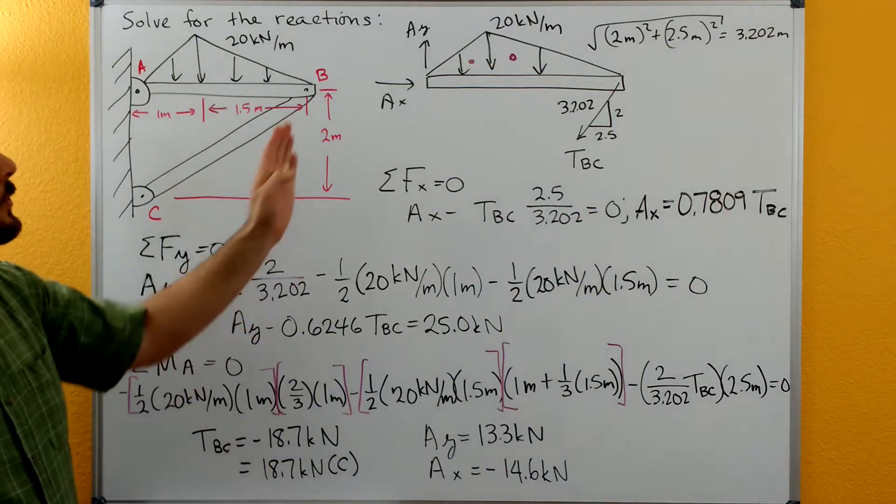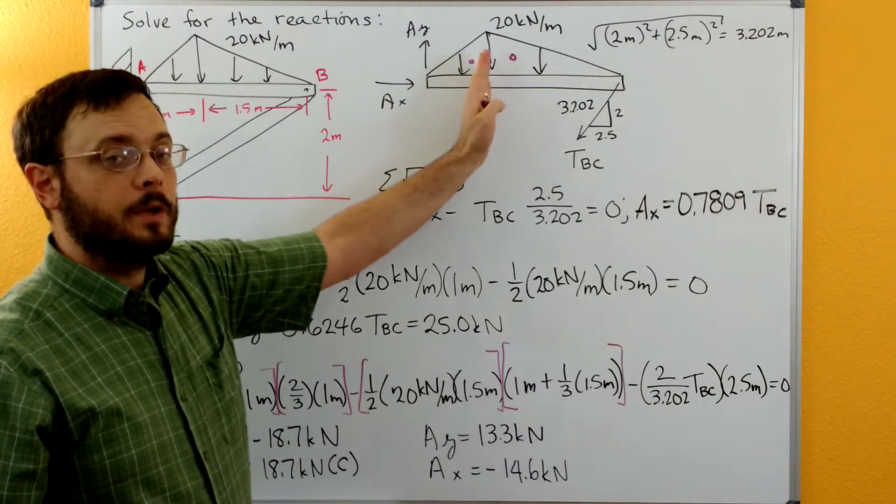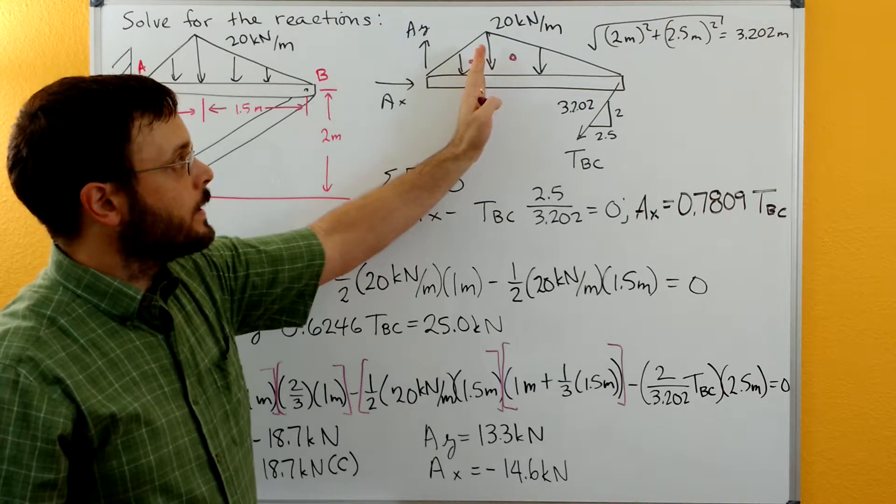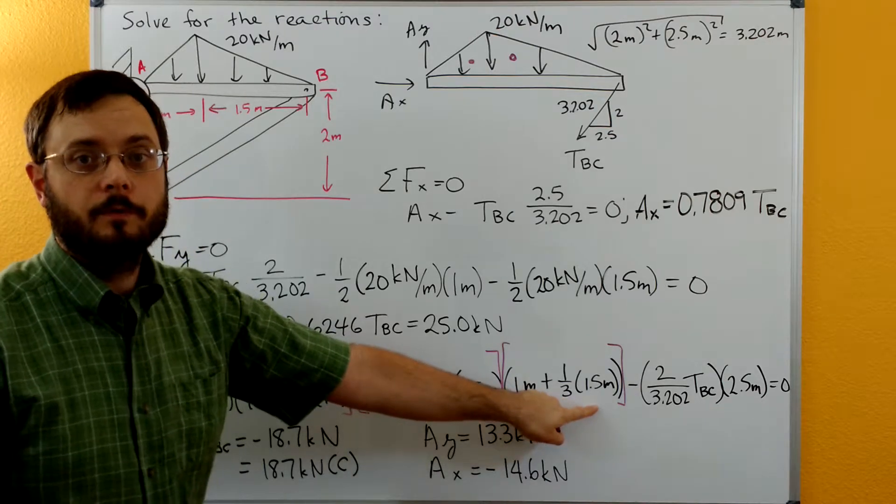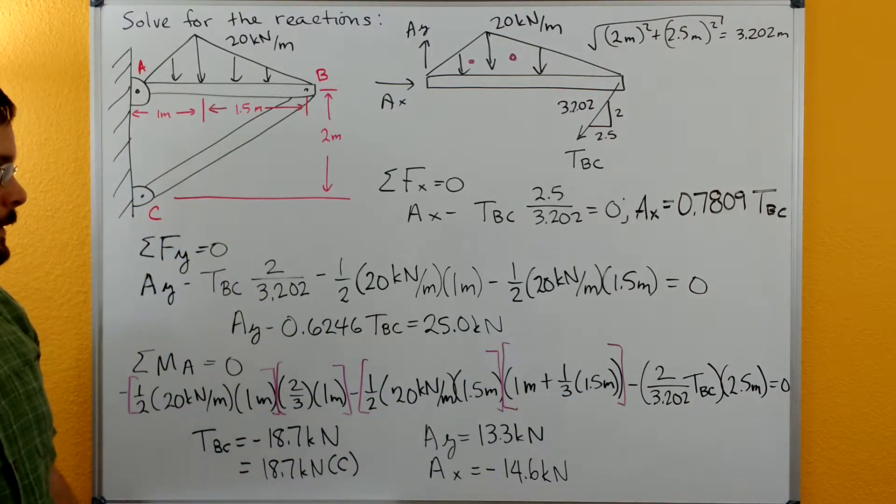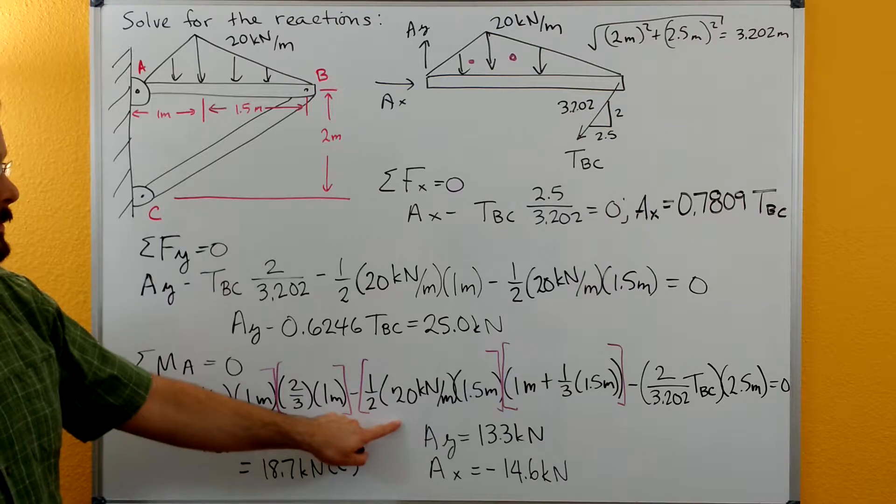For this centroid it's a little bit trickier. We have to go over the one meter and then we have to go over then another third of that distance. So one-third of the 1.5, the base for the second distributed load. And then there's the force part.